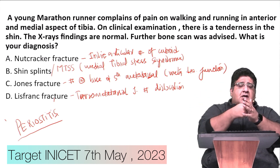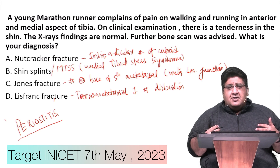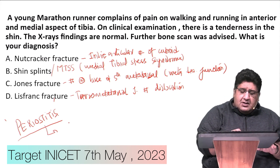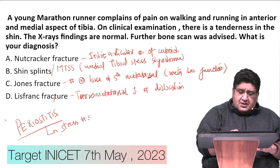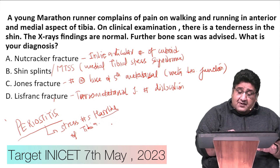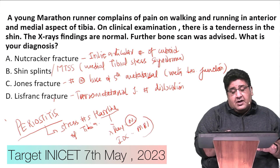The key word of shin splints is periostitis. Because of the constant cyclical loading, there is inflammation of the periosteum leading to periostitis. Because of the periostitis, there are small hairline stress fractures of the tibia. Since they are hairline fractures, x-rays are usually normal, and therefore the investigation of choice is MRI.